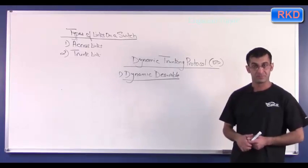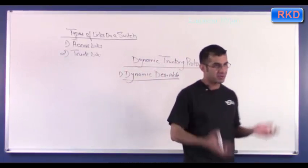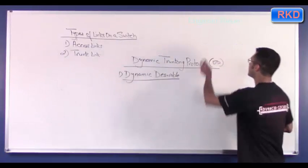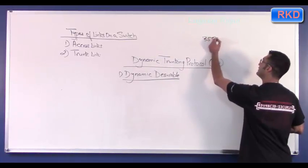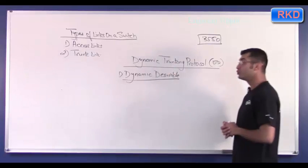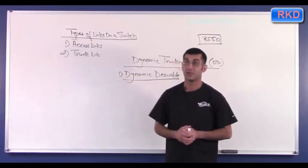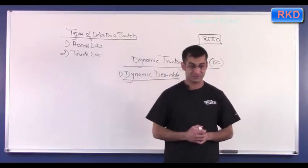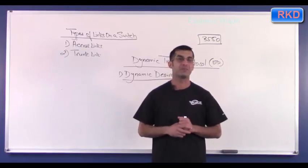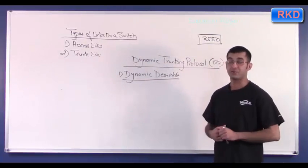Switch models in the Cisco world that end in the number 50 — for example the 3550 — have all ports in Dynamic Desirable mode by default. If two 3550s are connected back to back with a crossover cable, a trunk will automatically come up because both sides send and respond to DTP frames. Both sides are in Dynamic Desirable mode, so both send DTP frames and respond to the other side, and the trunk automatically comes up.